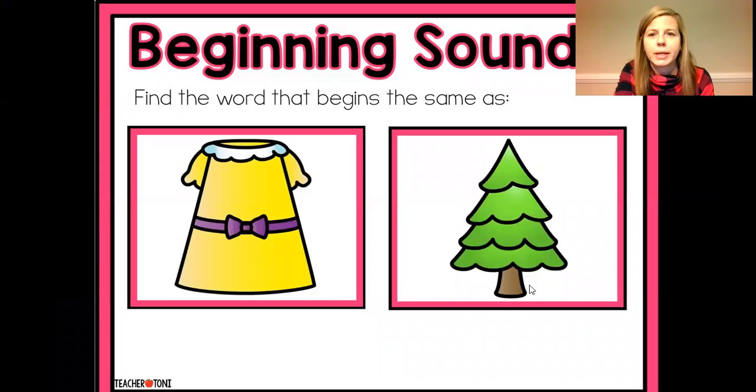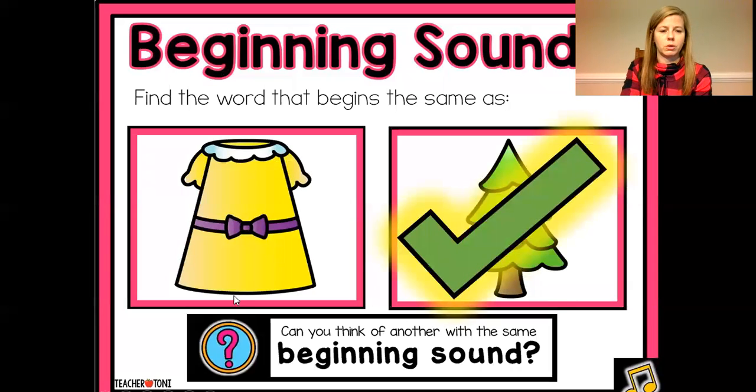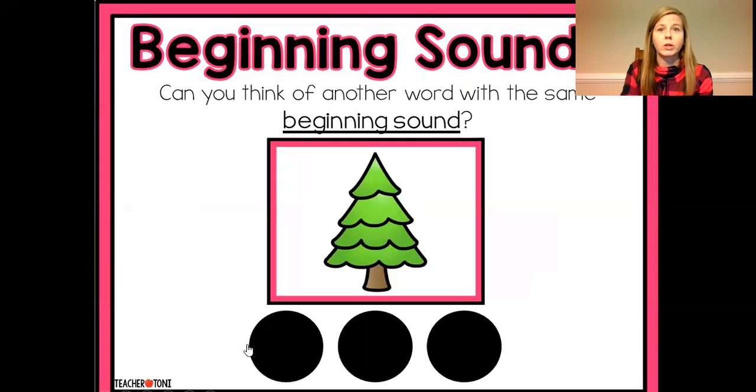Okay, beginning sound. The word is toss. T-t-t-toss. Which one begins like toss? We have dress or t-t-t-tree. Which one begins like toss? T-t-tree, right? That one's a little tricky because dress sometimes sounds good. Okay.